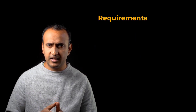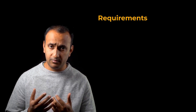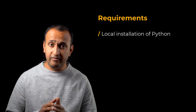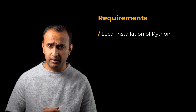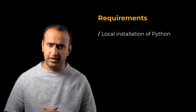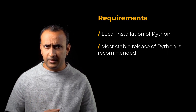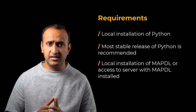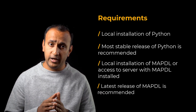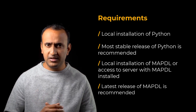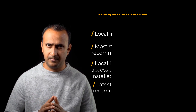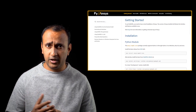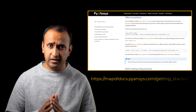PyMAPDL is used to issue APDL commands in a Pythonic way. To use PyMAPDL, one must install Python on their local system and have access to either a local installation of MAPDL or a server with MAPDL installed. PyMAPDL is supported on Python 3.6 through 3.9 and is compatible with ANSYS MAPDL 17.0 and newer versions. For best results, always use the current release, and refer to mapdl.pyansys.com for the most recent information.